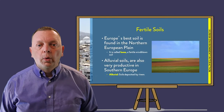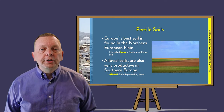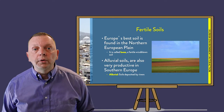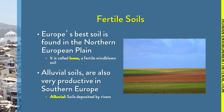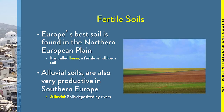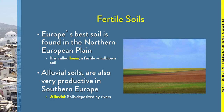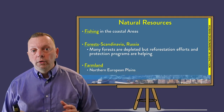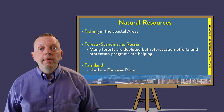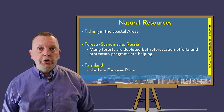While Europe's forests may be strained, Europe is blessed with a large area of fertile lands known as the North European Plain. Its fertility is provided by loess, which is a fertile, windblown soil. In the south of Europe, there are also fertile soils which are a result of alluvial soils — soils deposited by rivers. In addition to the farmland of the North European Plains, there are many coastal areas that are good for fishing.